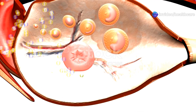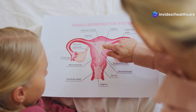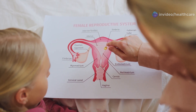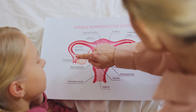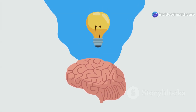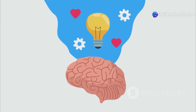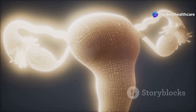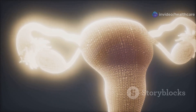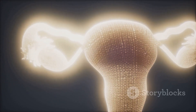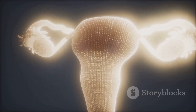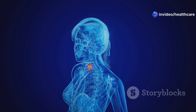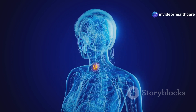Ovulation is not a standalone event but rather a carefully orchestrated process driven by a delicate balance of hormones. These hormones act as messengers, traveling through the bloodstream and signaling different organs. At the helm of this hormonal symphony is the hypothalamus, a small but mighty region in the brain, which releases gonadotropin-releasing hormone, or GnRH, acting on the pituitary gland.